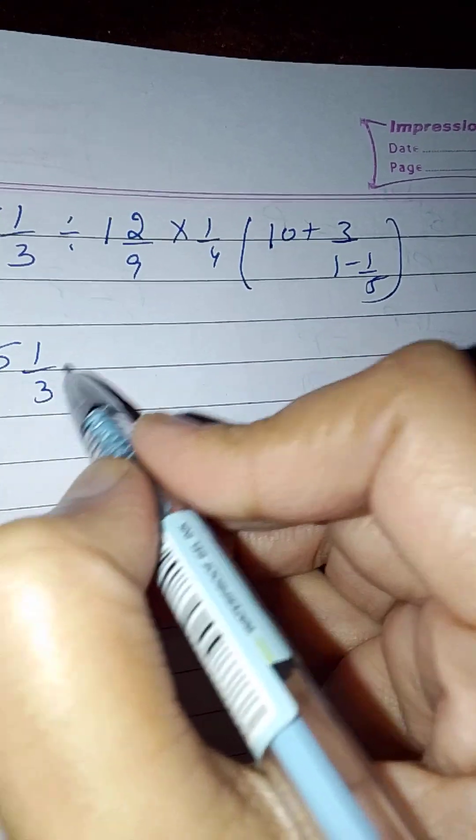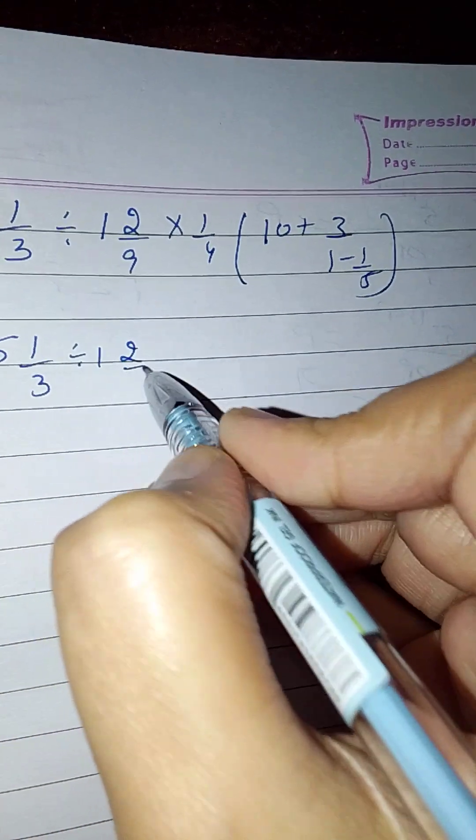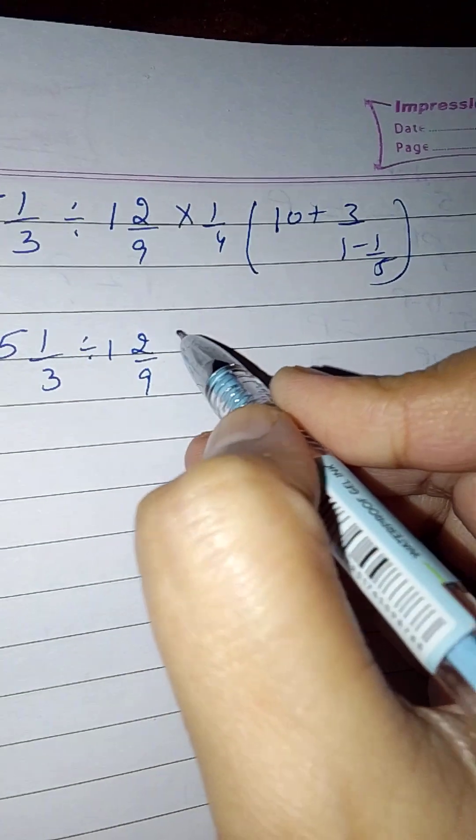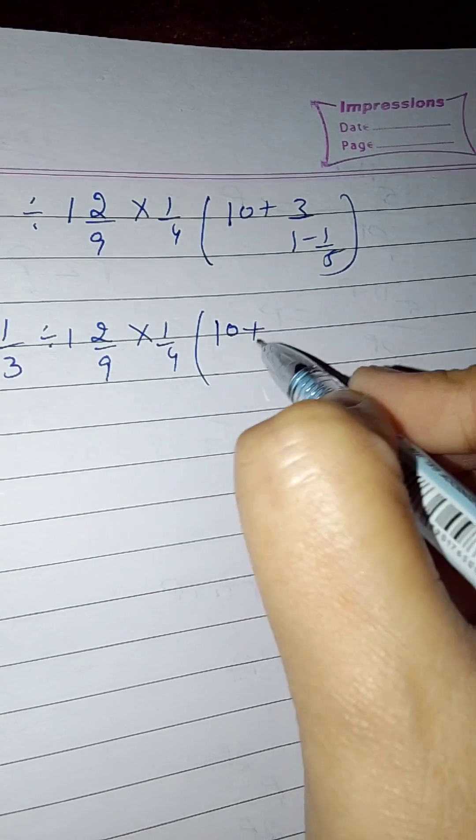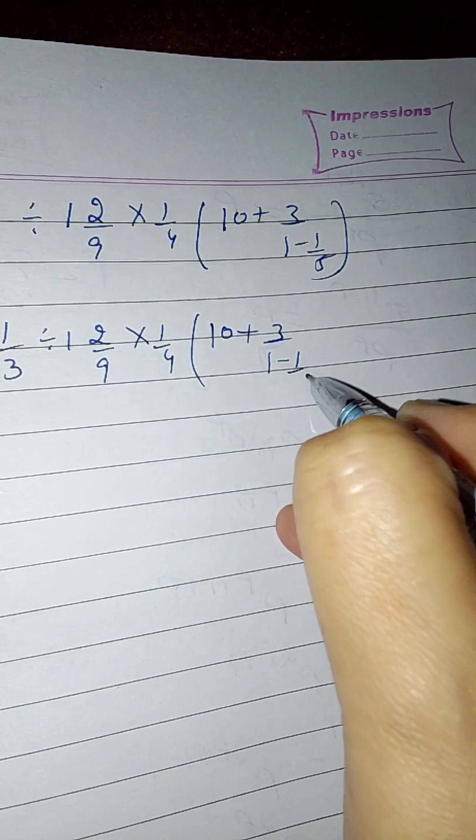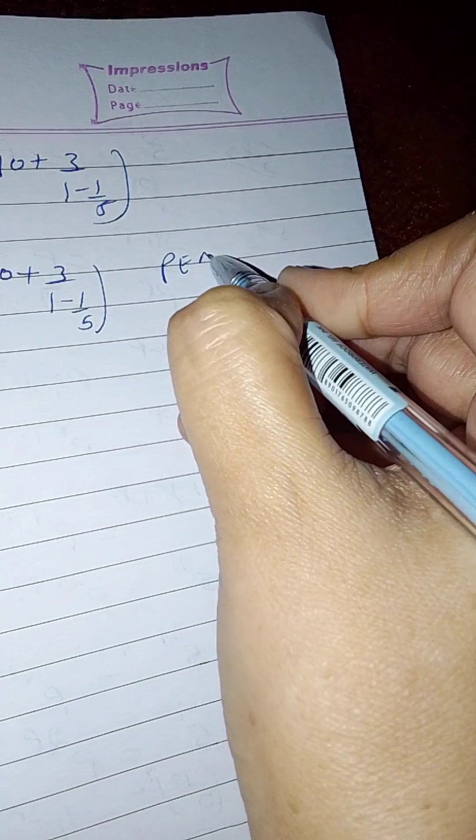5 1/3 divided by 1 2/9 into 1/4 bracket 10 plus 3 over 1 minus 1 over 5, according to PEMDAS rule.